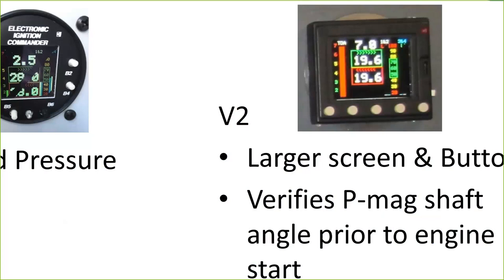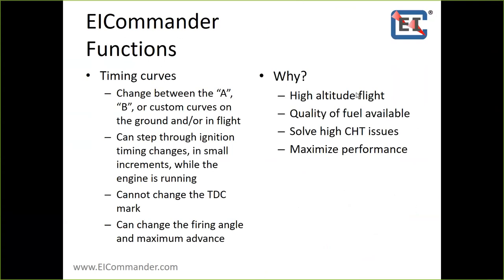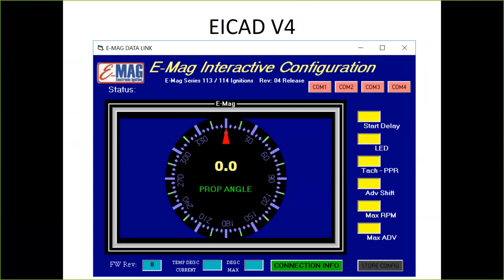If this PMAG was in an airplane that was flying and you get up high — say this is an angle valve — these numbers would go up probably 10 degrees at cruise as you're up high and manifold pressure is dropping off. One of the biggest questions I get about the PMAG is why these weird numbers like 19.6. The PMAG, to speed up processing, does everything at the byte level. If you take 360 degrees divided by 256, you get 1.4 degrees — so everything the PMAG does is in 1.4-degree increments.